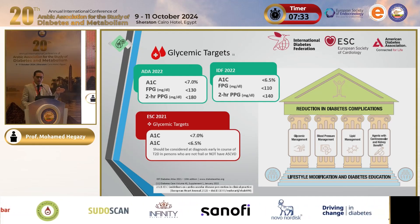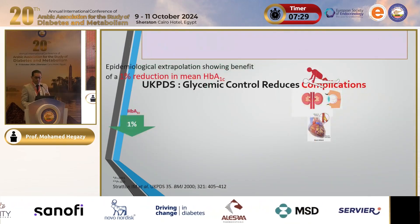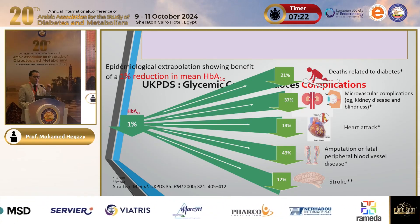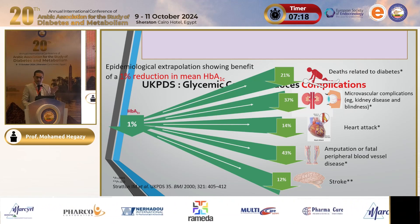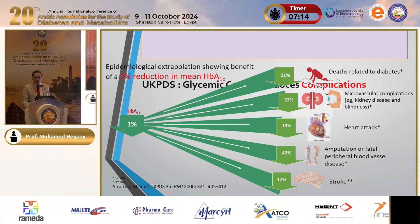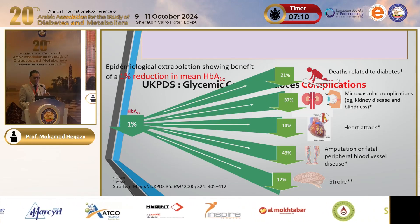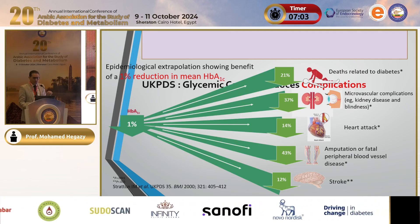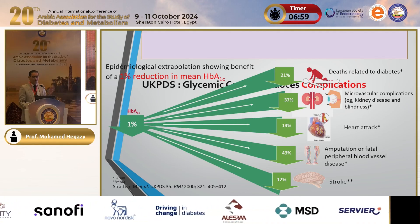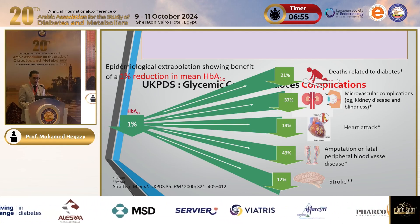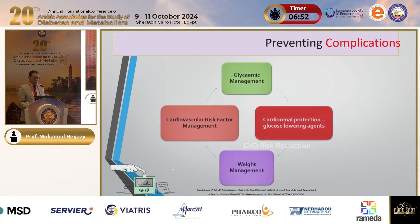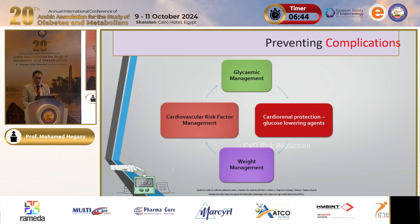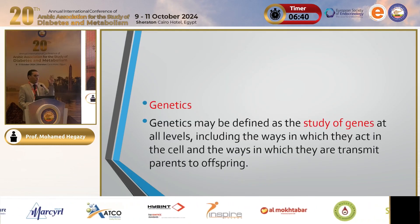We can set special targets for the patient according to their overall situation and lifestyle, allowing for either loose or tight glycemic control. According to UKPDS, decreasing HbA1c by one percent protects the patient significantly: 21 percent decrease in diabetes-related outcomes, 37 percent reduction in microvascular complications in the kidney, eye, and nerves, 40 percent reduction in heart attacks, 43 percent reduction in amputation and peripheral vascular disease, and 12 percent reduction in stroke.